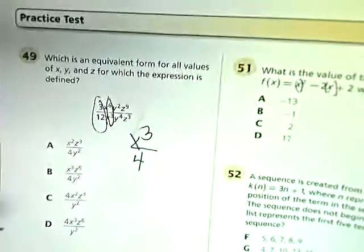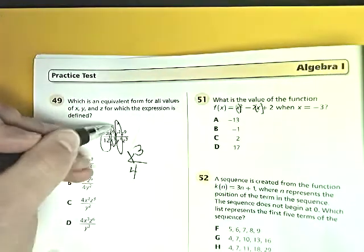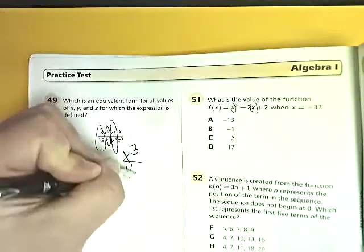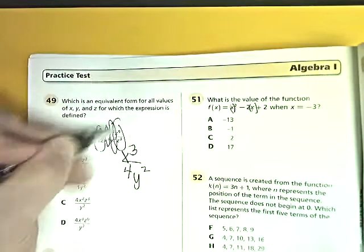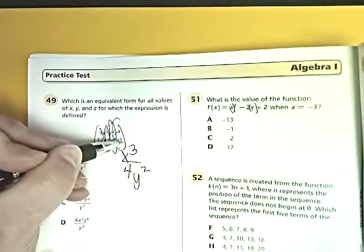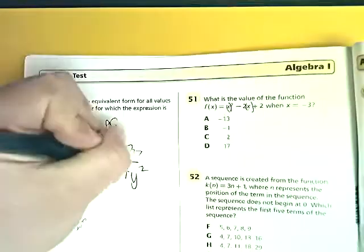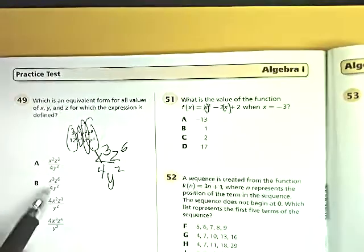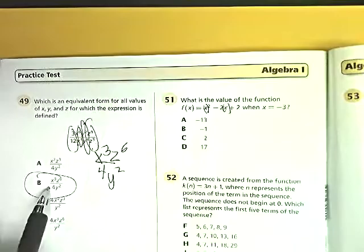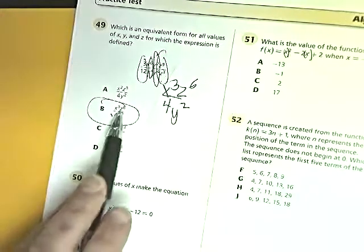For this one, the 2 and the 4, combine them. 4 is bigger than 2 by 2. So y to the second power on the bottom. And 9 and 3. 9 is definitely bigger than 3. 9 minus 3 is 6. So z to the 6 goes on top. Here it is. Right here. Very simple. It all matches up perfect.